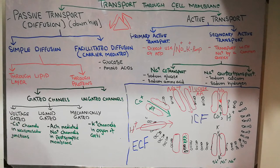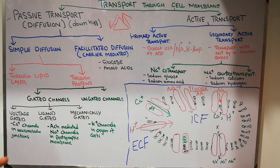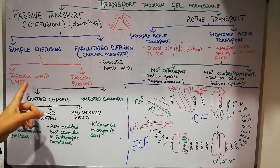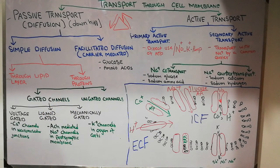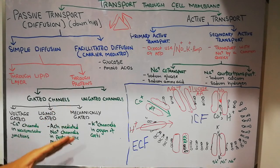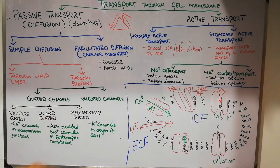Gated channel gates can open through a voltage or action potential, through a ligand, or mechanically through pressure or touch. Facilitated diffusion is different from simple diffusion through proteins in that the protein facilitates the movement of substances like glucose or amino acids into the cell — there is some conformational change in the protein. In other protein channels, gates simply open and close but do not facilitate the movement.